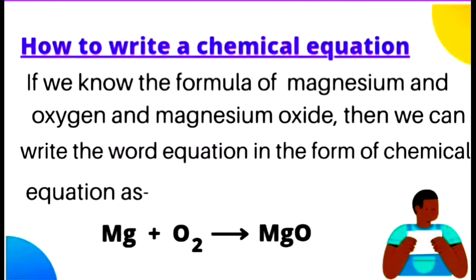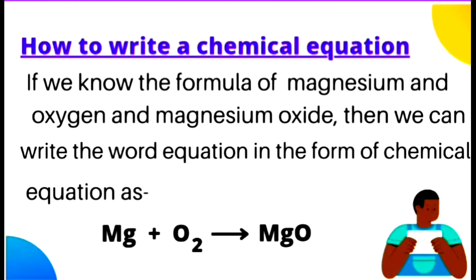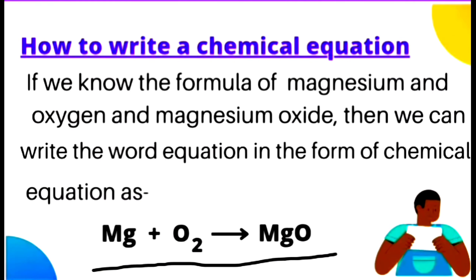Now, how to write a chemical equation? Jo word form mein equation thi use ab chemical symbols ke saath kaise represent karein? Iske liye humein magnesium, oxygen, aur magnesium oxide ka formula pata hona chahiye. Jaise ki yahan aap dekh sakte hain: Mg magnesium ko represent karta hai, O2 oxygen hai, aur jo product bana hai magnesium oxide use MgO ke dwara represent kiya gaya hai. Iss tarah se chemical equation ko represent kiya jata hai.